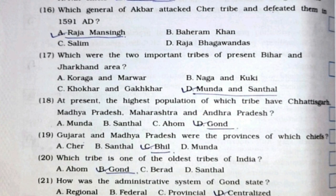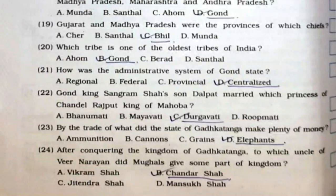Eighteenth: At present, the highest population of which tribe is found in Chhattisgarh, Madhya Pradesh, Maharashtra, and Andhra Pradesh? It's option number D, Gond. Nineteenth: Gujarat and Madhya Pradesh were the provinces of which chiefs? It's option number C, Bheel. Twentieth: Which tribe is one of the oldest tribes of India? It's option number B, Gond. Twenty-first: How was the administrative system of Gond state? It's option number D, centralized.